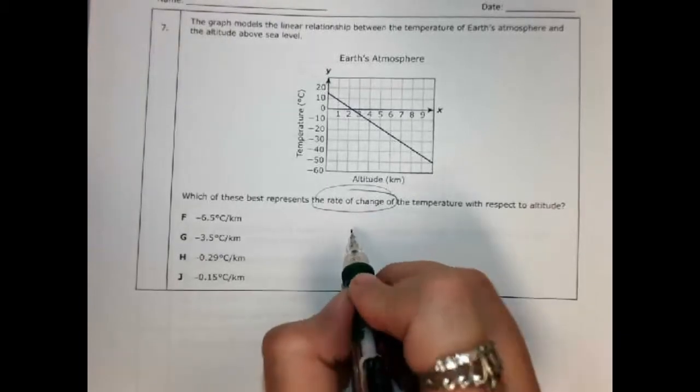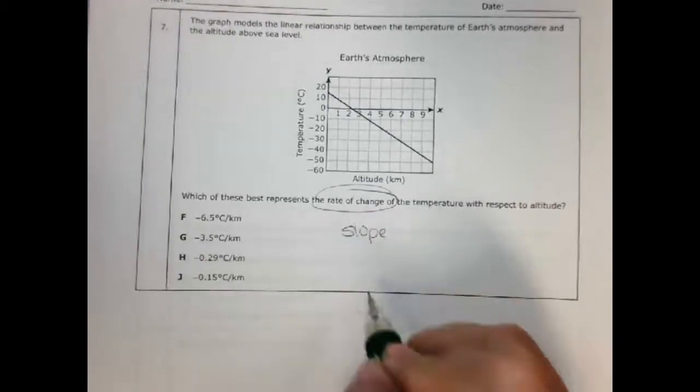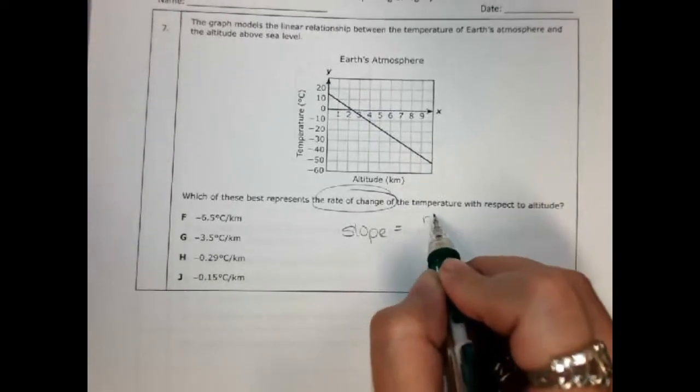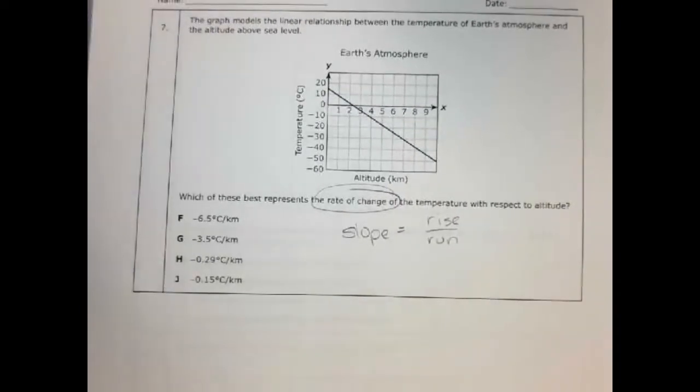Every time you see rate of change, you should think, that's slope. And slope is awesome because we know what slope is. Slope is always rise over run. You don't have to memorize it. You already know it's rise over run.